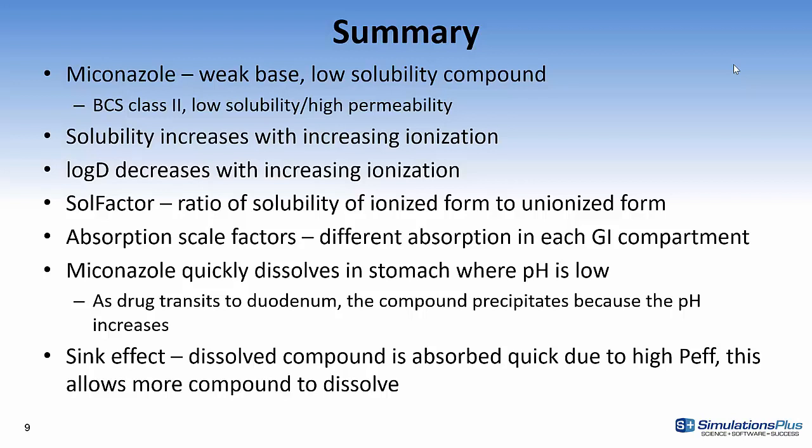We also looked at absorption scale factors. This allows different absorption to occur in each of the GI compartments. Miconazole quickly dissolves in the stomach because the pH is low and there's a very high fraction of ionized groups and remember that solubility increases with ionization. Then as the drug transits into the duodenum the pH goes up and the compound precipitates due to the lower solubility at the higher pH. We saw the sink effect that the dissolved compound if it's quickly absorbed due to the high Peff then this allows more of the compound to dissolve. So eventually it all dissolves in the GI tract and is absorbed into the portal vein and then into systemic circulation.